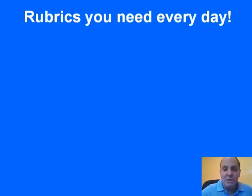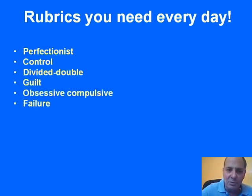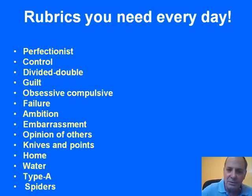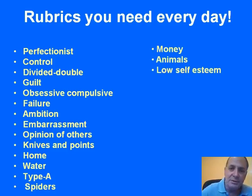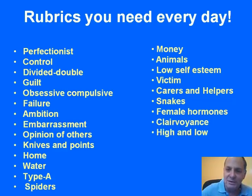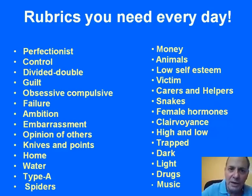Rafi and I created this repertory because we needed it. The rubrics we have at the moment include: Perfectionist, Control, Divided, Double, Guilt, Obsessive-Compulsive, Failure, Ambition, Embarrassment, Opinion of Others, Knives and Points, Home, Water, Type A People, Spiders, Money, Animals, Low Self-Esteem, Victims, Carers and Helpers, Snakes, Female Hormones, Clairvoyance, High and Low, Trapped, Dark, Light, Drugs, and Music. We continue to develop this repertory all the time, according to the rubrics we find most needed in practice or from feedback from our users.